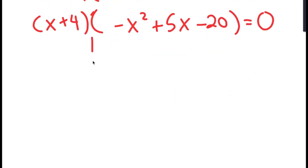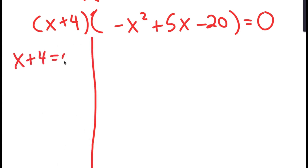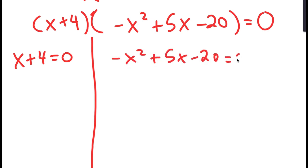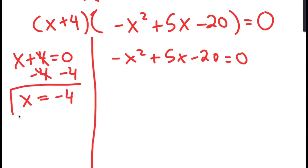So I get two equations from this: x plus 4 equals 0, and negative x squared plus 5x minus 20 equals 0. For x plus 4 equals 0, all we do is subtract 4 on both sides, giving x equals negative 4.